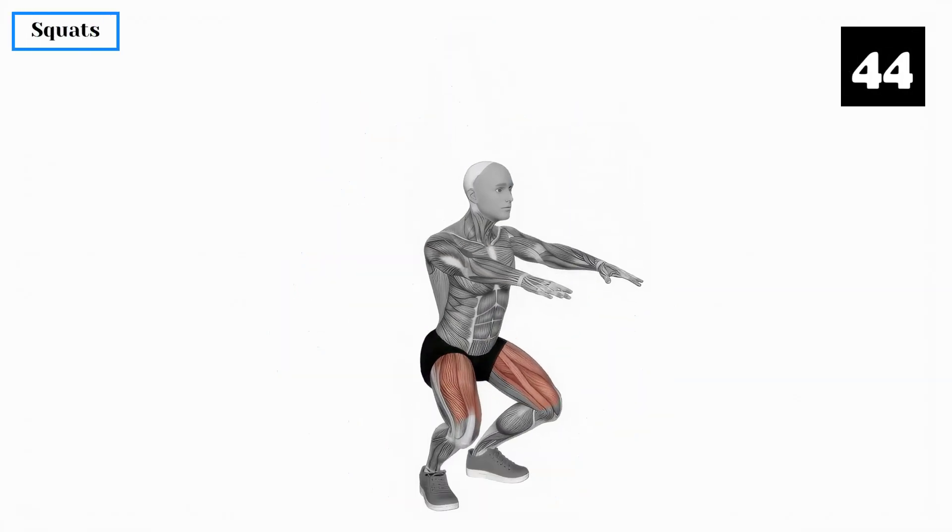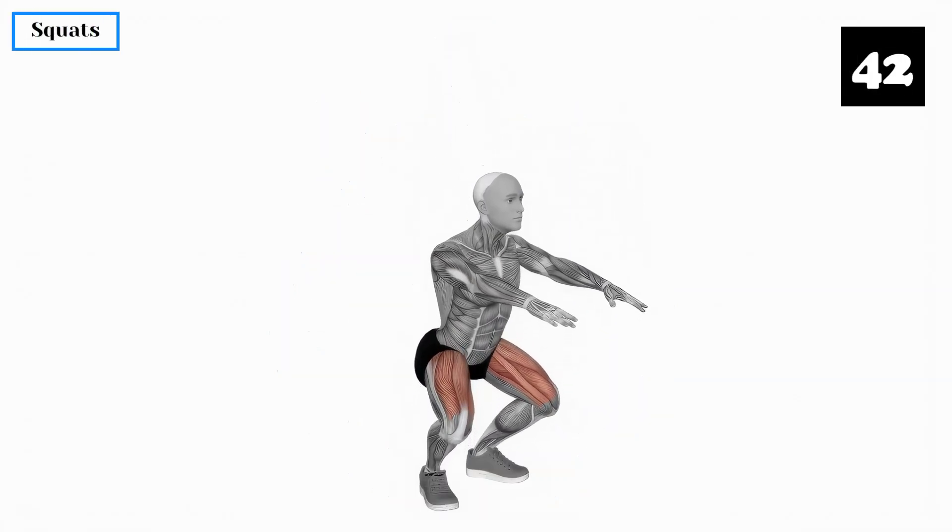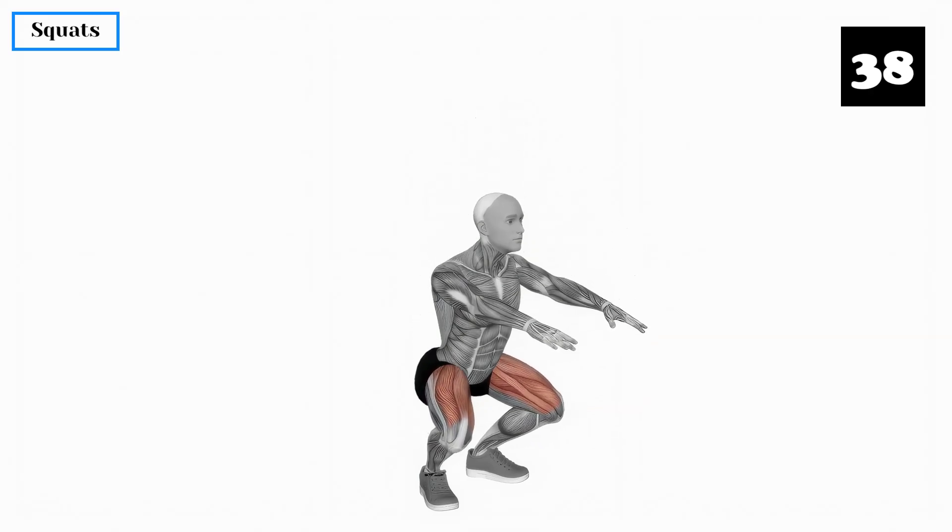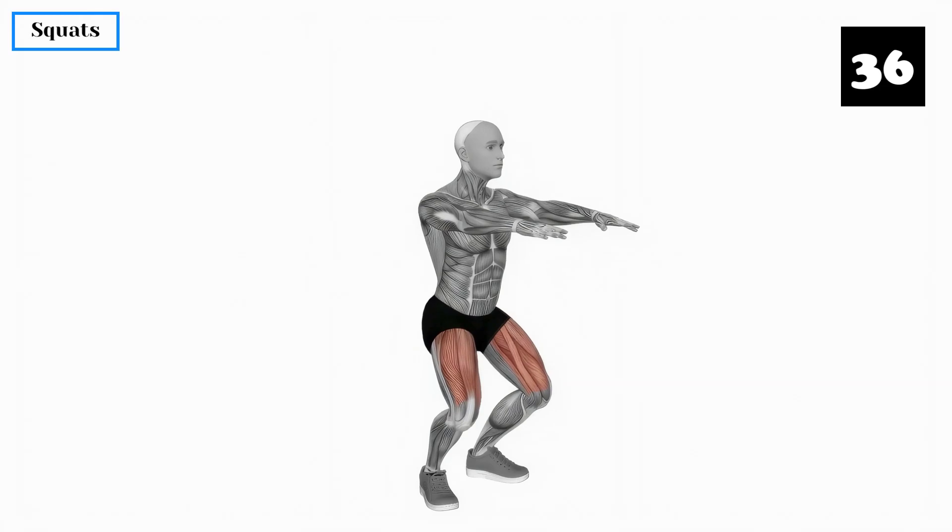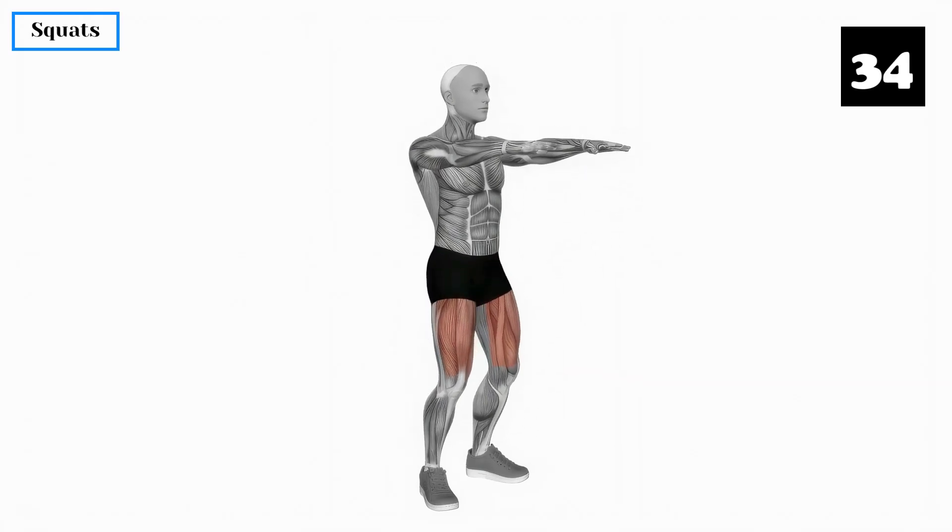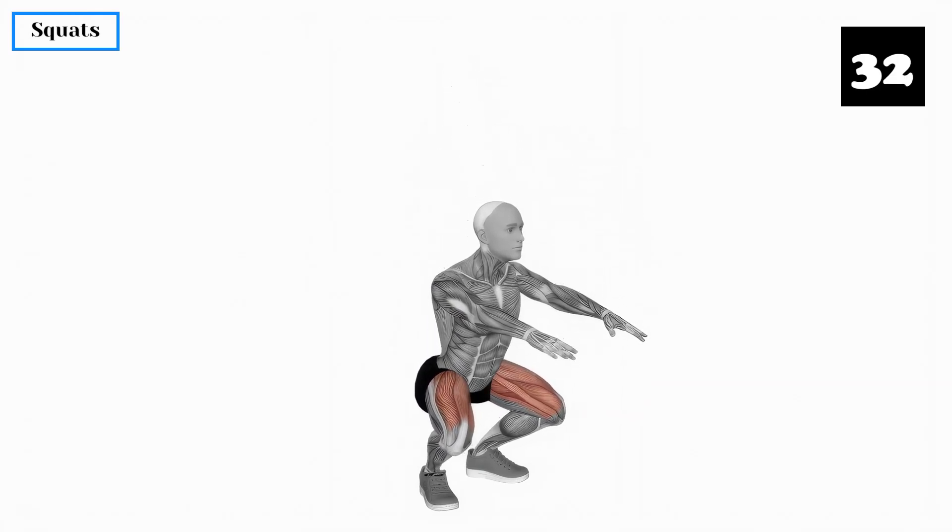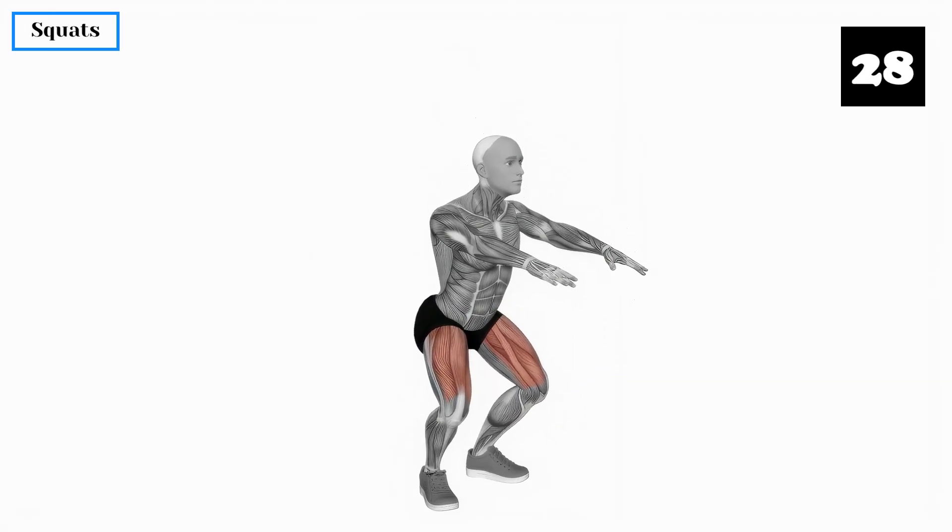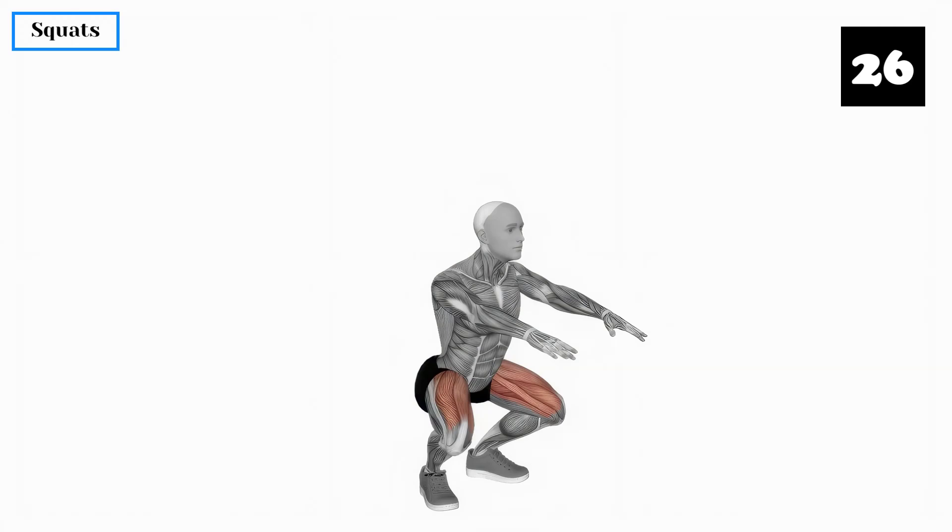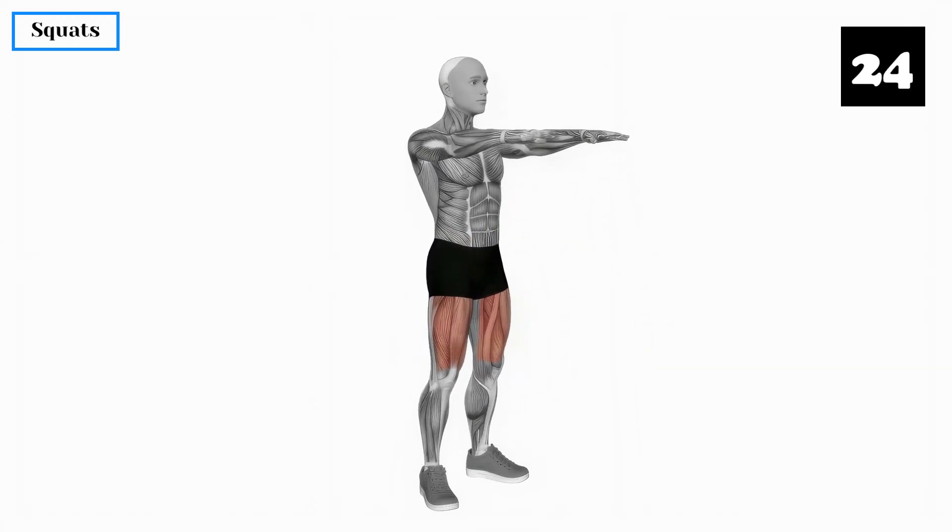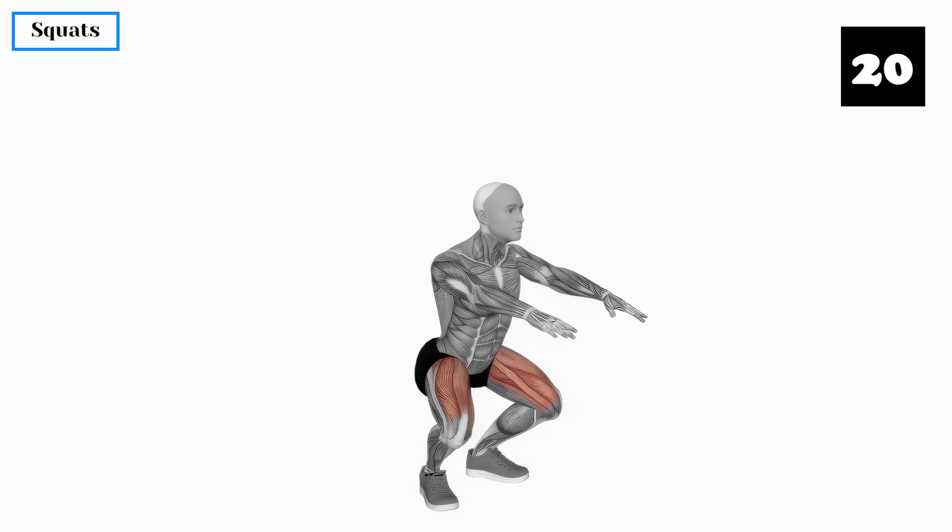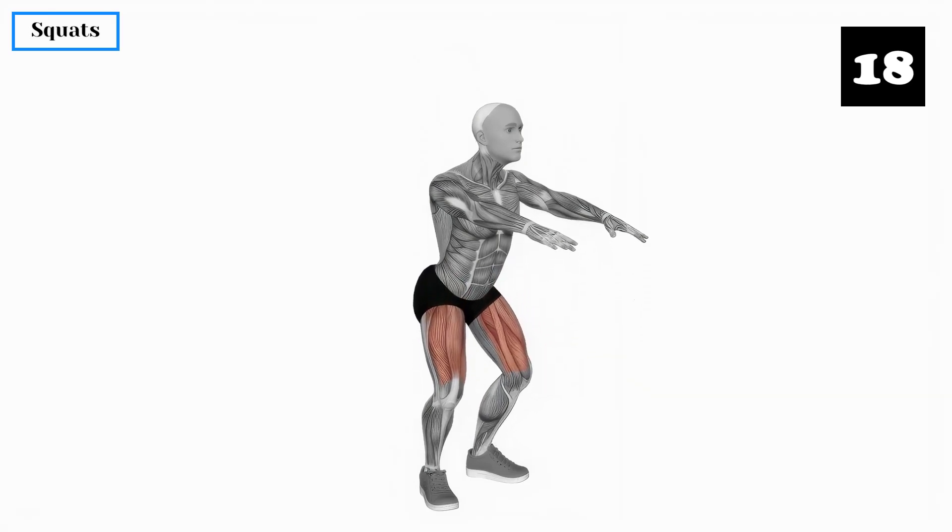Exercise 2: Squats. Squats are a fantastic lower body exercise that strengthens the pelvic floor muscles and improves blood flow to the groin area. Stand with your feet shoulder width apart and lower your body as if you are sitting back into an imaginary chair. Keep your back straight and your knees aligned with your toes. Repeat this exercise in sets of 10, gradually increasing the number of squats.